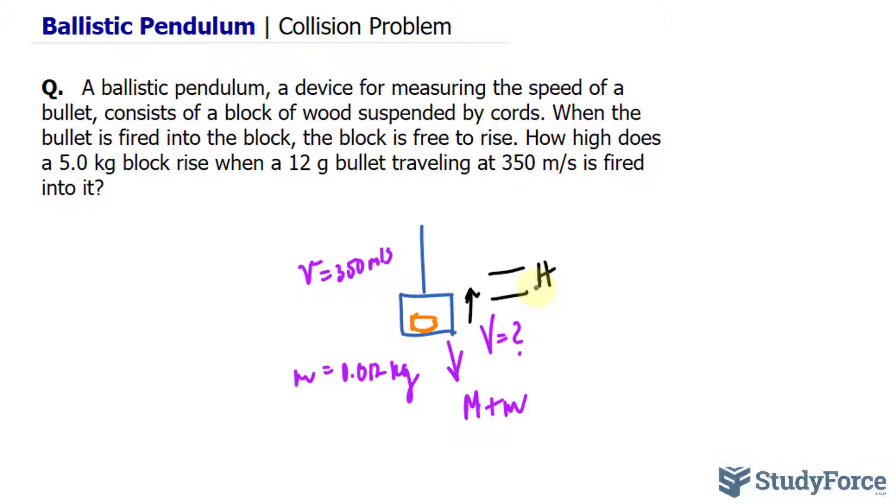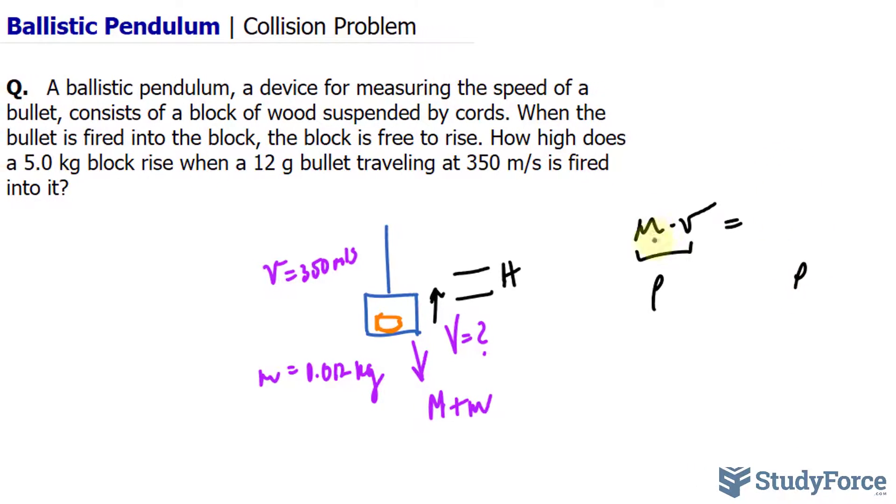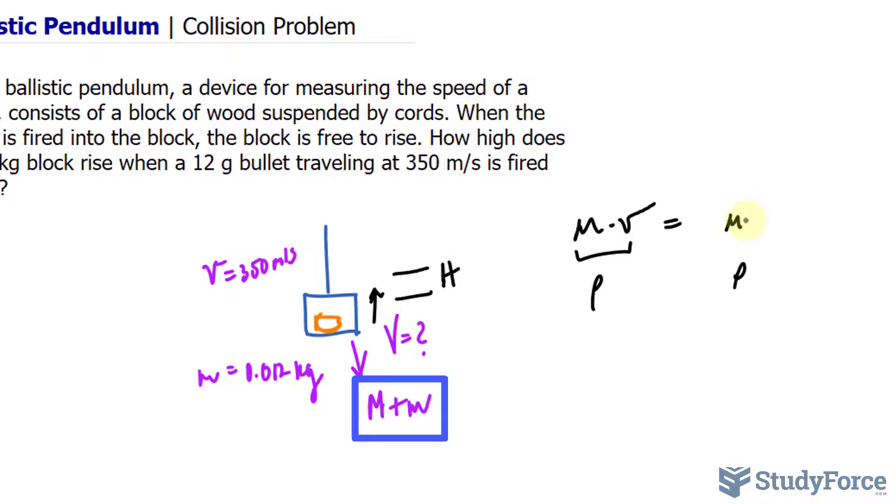So since the collision here is inelastic, we have to apply the conservation of momentum formula. The conservation of momentum formula looks like this: mv, mass times velocity, that's equal to the momentum (I'll represent momentum by p) before the collision, is equal to the momentum after. The mass, once they are combined, is m plus big M times capital V for the velocity after.